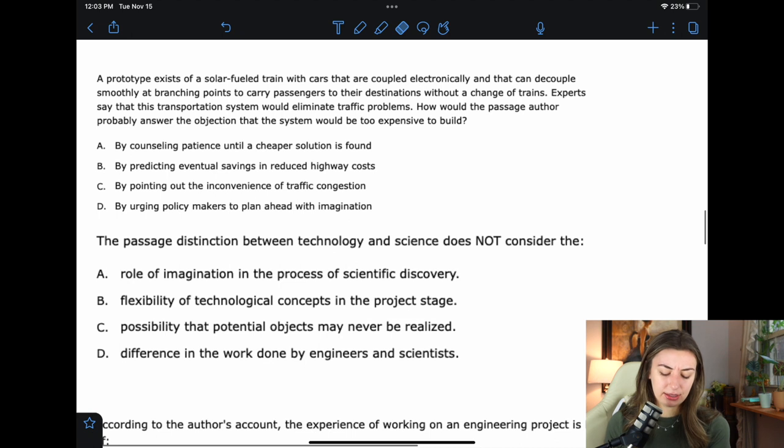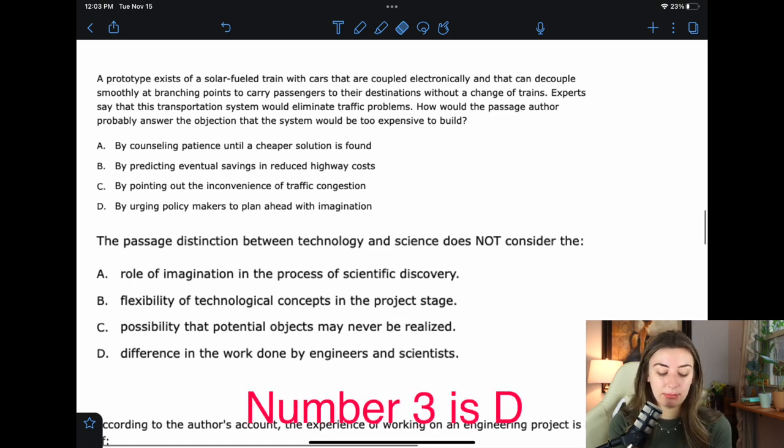C, by pointing out the inconvenience of traffic congestion. I don't think that that really has anything to do with the question stem. Because I feel like you could find a different solution that wouldn't be so expensive. The problem is it's too expensive. Not that traffic's too bad. Like, traffic's too bad, so we came up with a solution, but it's too expensive. I feel like we're going back to the beginning of the problem. I don't love it. I like B better. D, by urging policymakers to plan ahead with imagination. Ooh, I like that word. Imagination. Whimsy. Engineers are imaginists. They're much better than scientists and novelists. I feel like D matches the tone that the author is desperately trying to get across better than B. Basically, it's more whimsical, in my opinion.